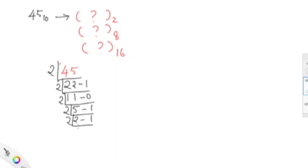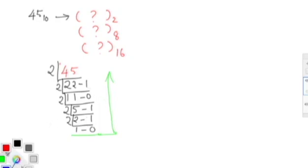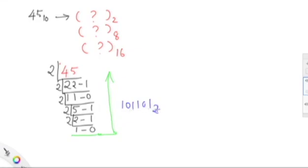When the number cannot be further divided, we stop the conversion. Then we collect the remainders from the bottom upwards and write the number. The answer we get from this conversion is 1 0 1 1 1 0 1, where the base is 2. So the answer is 1011101 to the base 2.